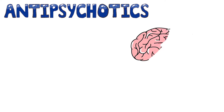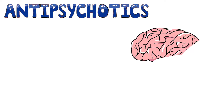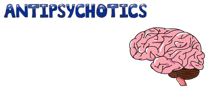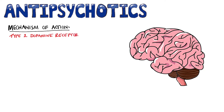The first thing we need to know is how this class of drugs works. Both typical and atypical antipsychotics block dopaminergic signaling in the CNS. Specifically, they are type 2 dopamine receptor antagonists, or D2 receptor antagonists.